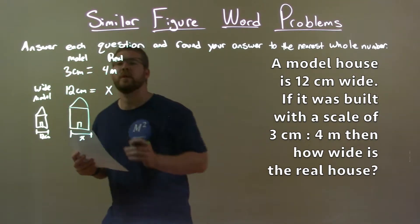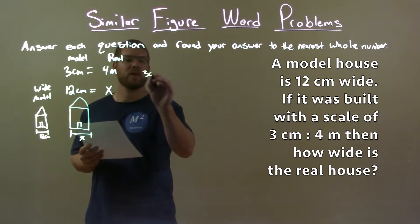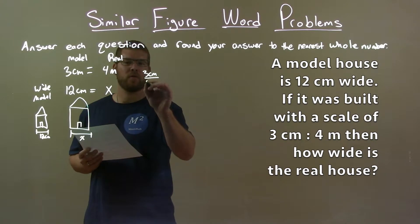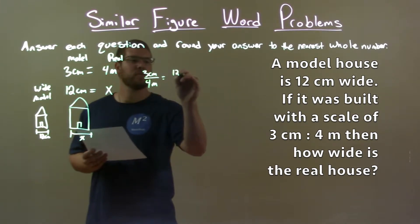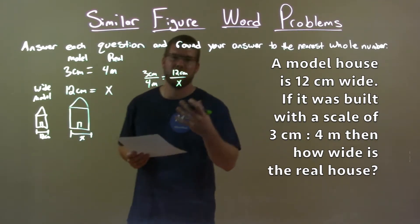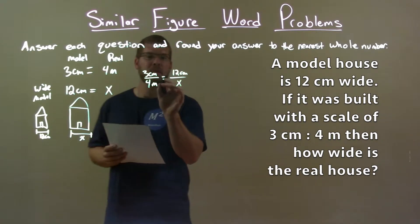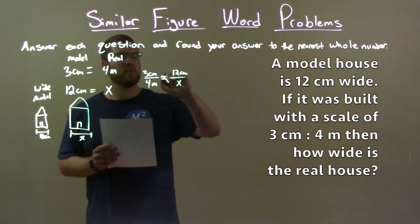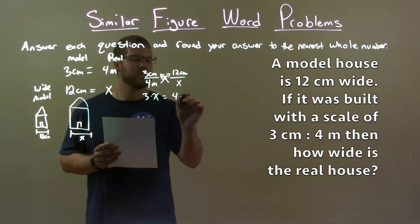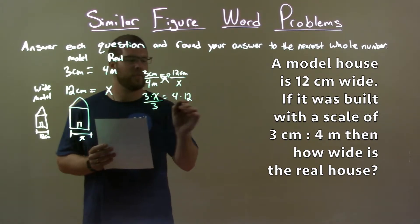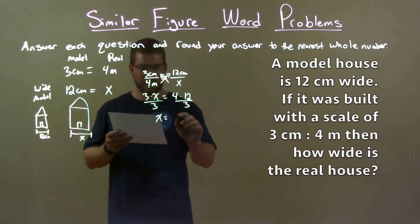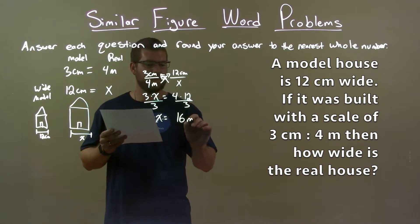Well, with this, we can create a proportion. We know 3 centimeters, that ratio from the model to real over 4 meters should equal 12 centimeters, the width of the model to the actual width of the real house. Let's cross multiply and solve for X. 3 times X equals 4 times 12. We divide both sides by 3. X is now by itself. And 4 times 12 divided by 3 is 16. This is in meters.